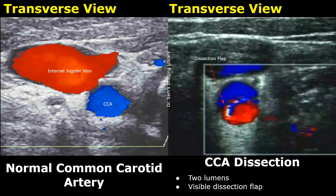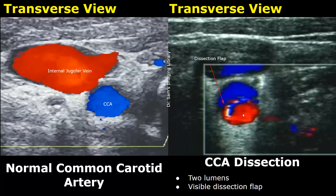This is a transverse view showing the common carotid artery and jugular vein. Over here we have CCA dissection in transverse view with color Doppler applied. We can see the two lumens with a dissection flap in the middle. We may also find some color mixing on color Doppler.